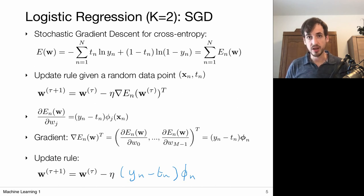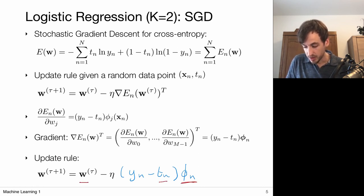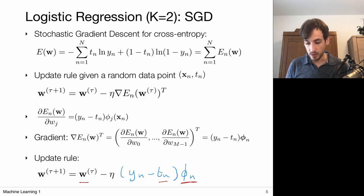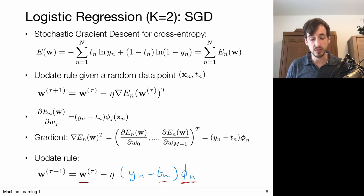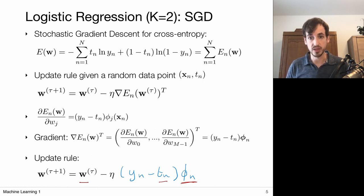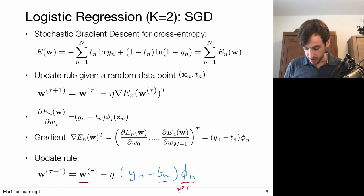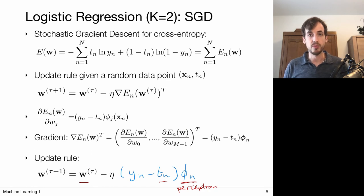This update rule — old weight vector plus the error times the feature vector — reminds us of the perceptron algorithm, where we also add to the weight vector a term involving the target times the feature vector. But in the perceptron algorithm, we only applied this update whenever we had a misclassified point. Now we're essentially updating for every point, weighted with the prediction error. Because y_n is never perfectly 1 or 0, this becomes a soft version of the perceptron algorithm.